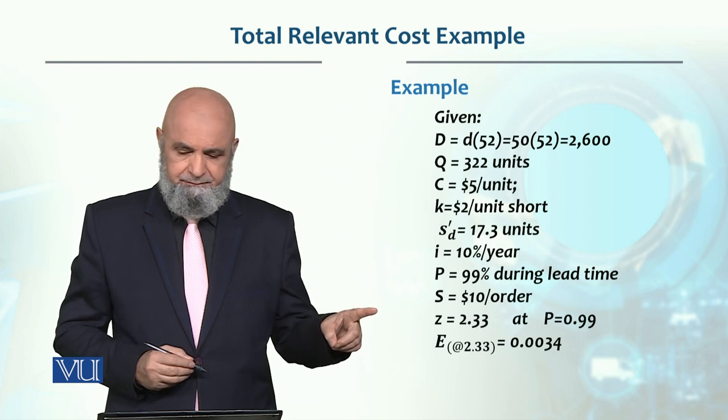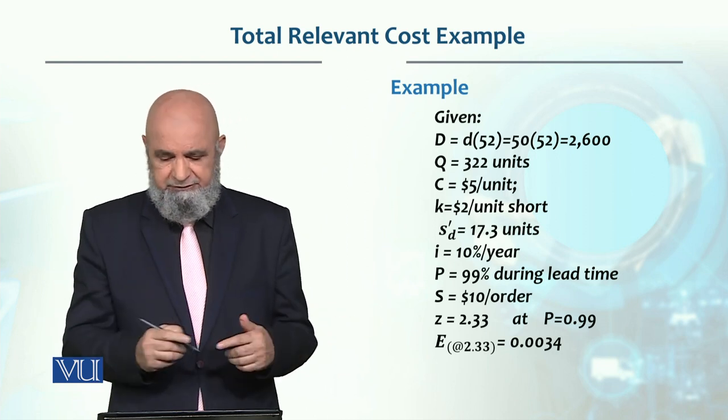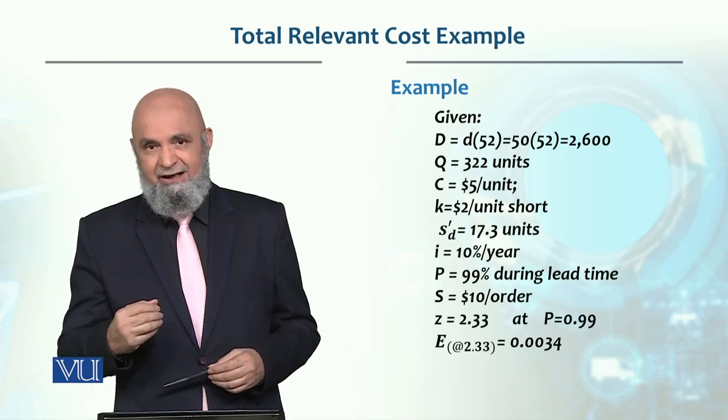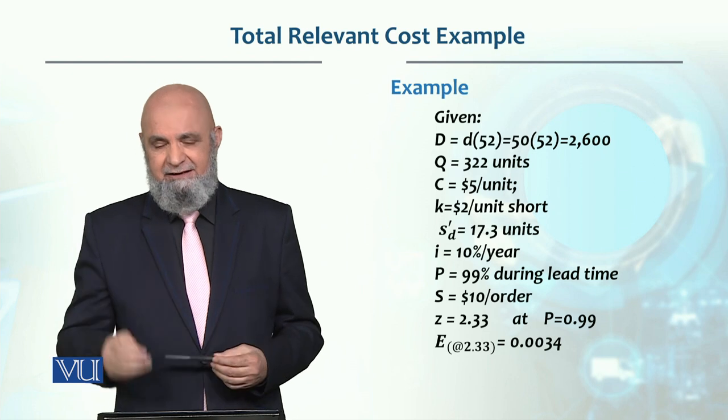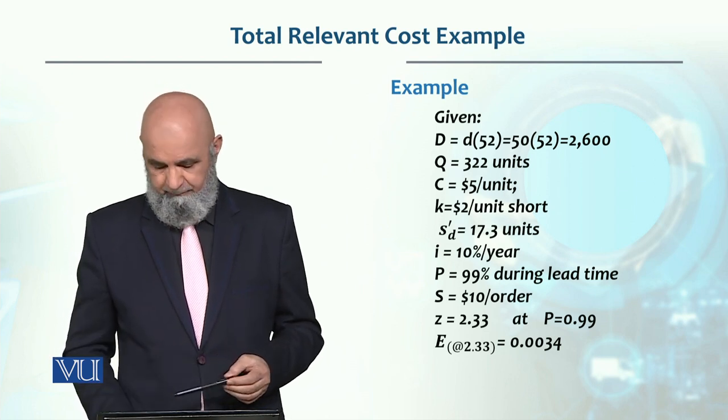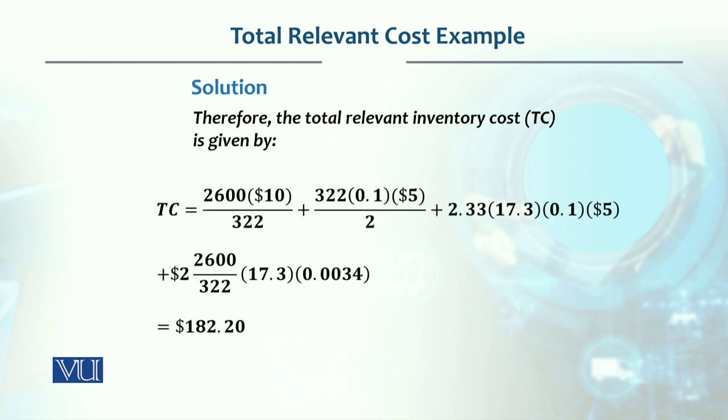The Z value is 2.3 from the row and 0.03 from the column, which sum to 2.33. The related E(z) value is 0.0034. Now we use these values in the formula. When we incorporate these figures into the formula, the total relevant cost we get is...